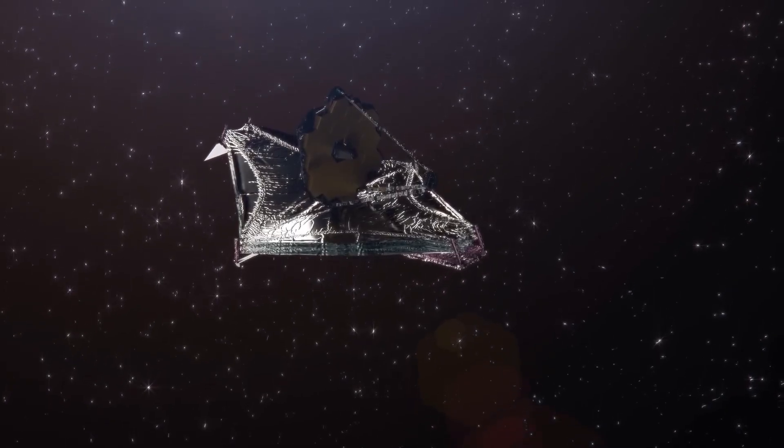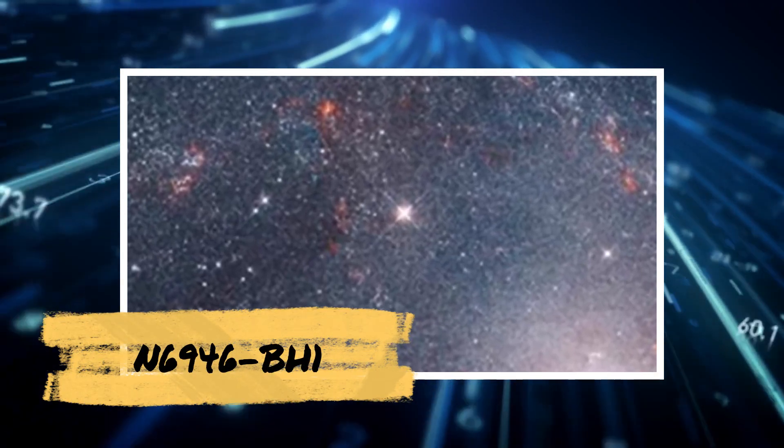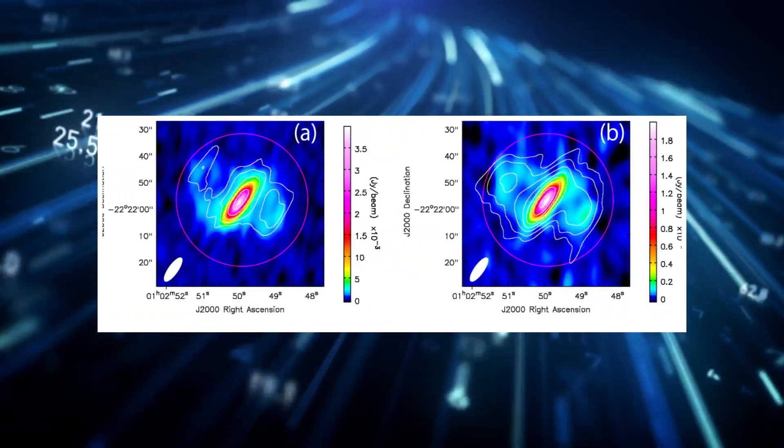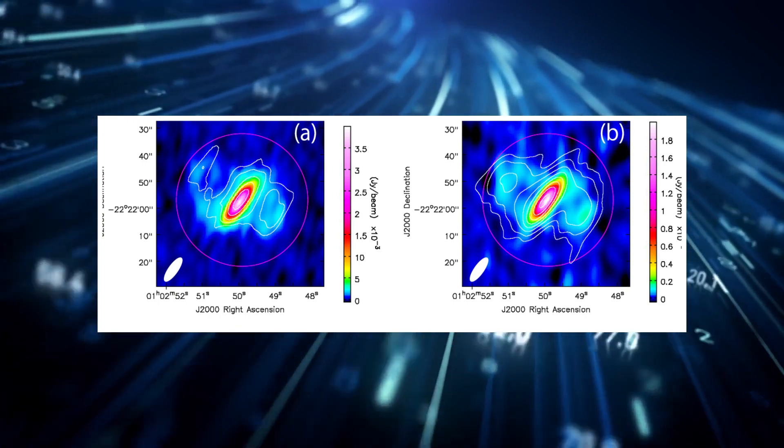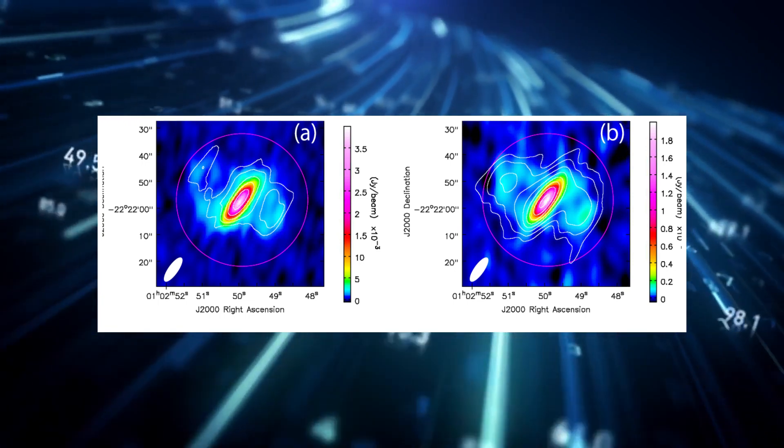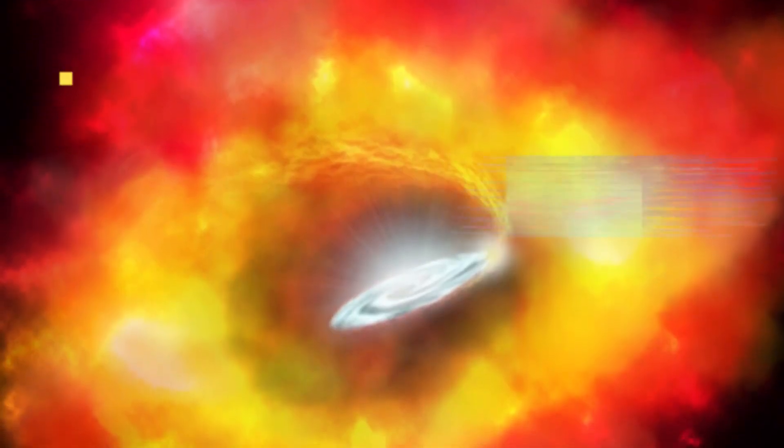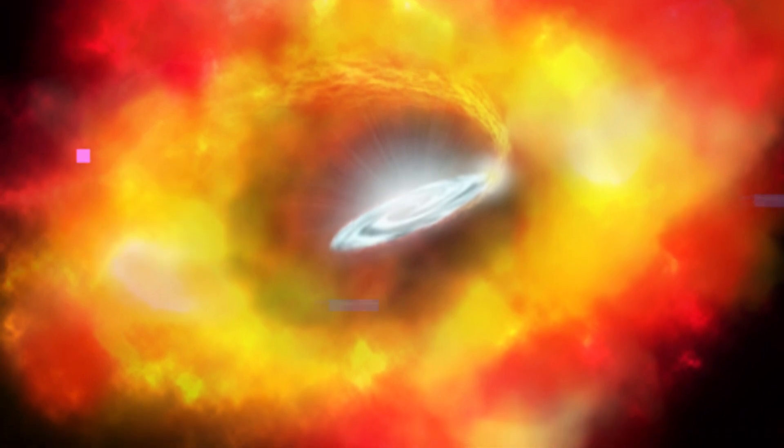This year, using the James Webb, astronomers gazed at N6946BH1 for the first time since it vanished. Astonishingly, they spotted a luminous infrared signature right where the star was previously located, which hadn't been identified by prior telescopes. Furthermore, instead of one source, they distinguished three: two dimmer ones flanking a brighter central source.